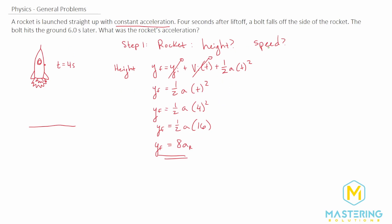Now we do a similar thing to find the speed of the rocket. The equation is: v_final = v_initial + a × t. The initial velocity is zero, so v_final = a × t. Using t = 4 seconds, v_final = 4 times the acceleration of the rocket.